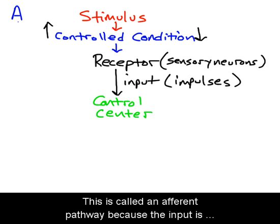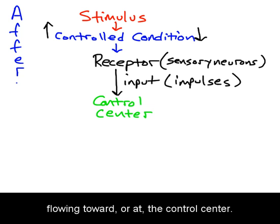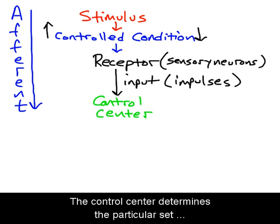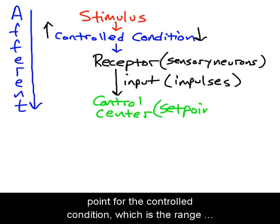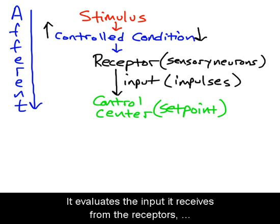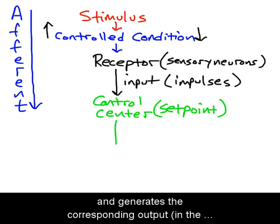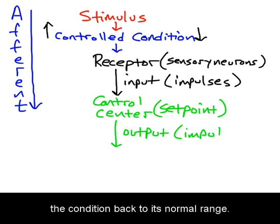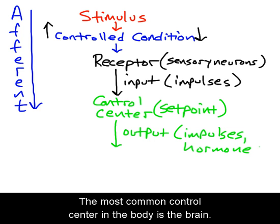This is called an afferent pathway because the input is flowing toward the control center. The control center determines the particular set point for the controlled condition, which is the range of values in which the condition is to be regulated. It evaluates the input it receives from the receptors and generates the corresponding output in the form of nerve impulses or hormones needed to restore the condition back to its normal range. The most common control center in the body is the brain.